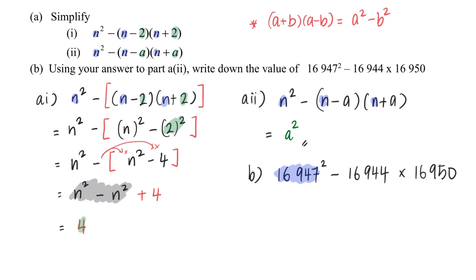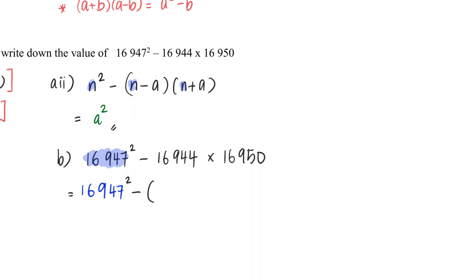16947 brings me to the point where when I write this down, I then need to write it in this form: 16947 minus some number, times 16947 plus that same number.